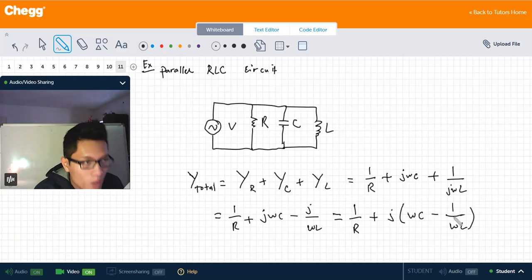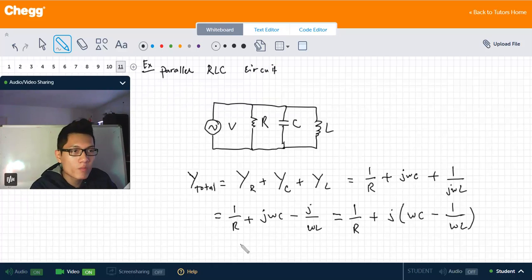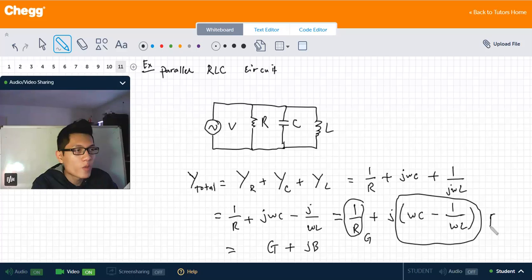Recall the form that we have from the previous page: G plus jB. We can write the total admittance as G plus jB.